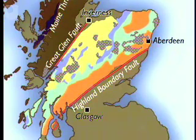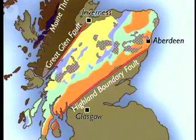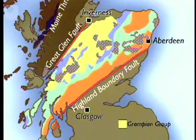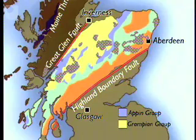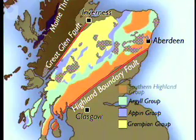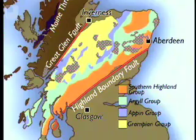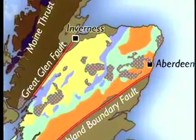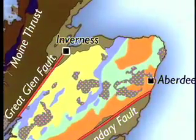Four sedimentary sequences make up the Dalradian: the Lower Grampian group, the Appin, the Argyll, and the youngest, the Southern Highland group. At this scale, Dalradian structural complexity is simplified.